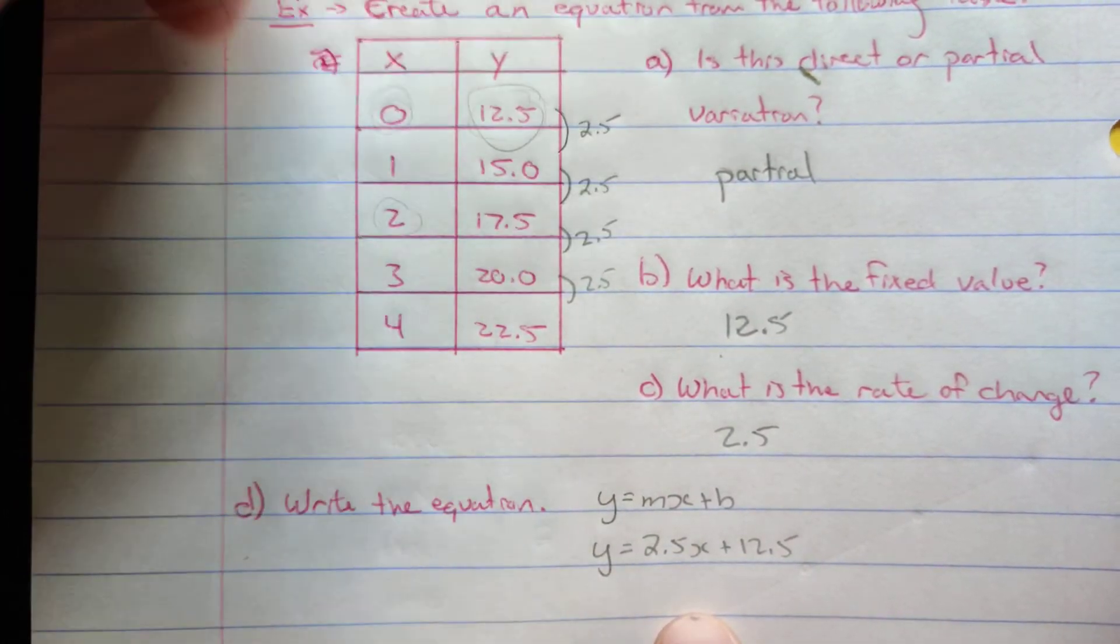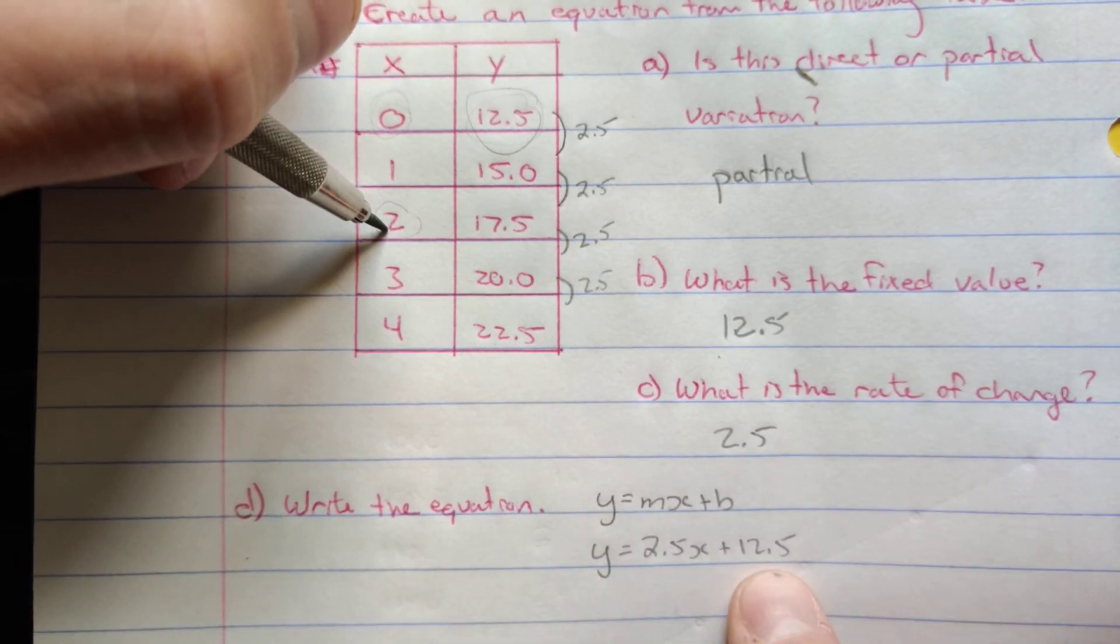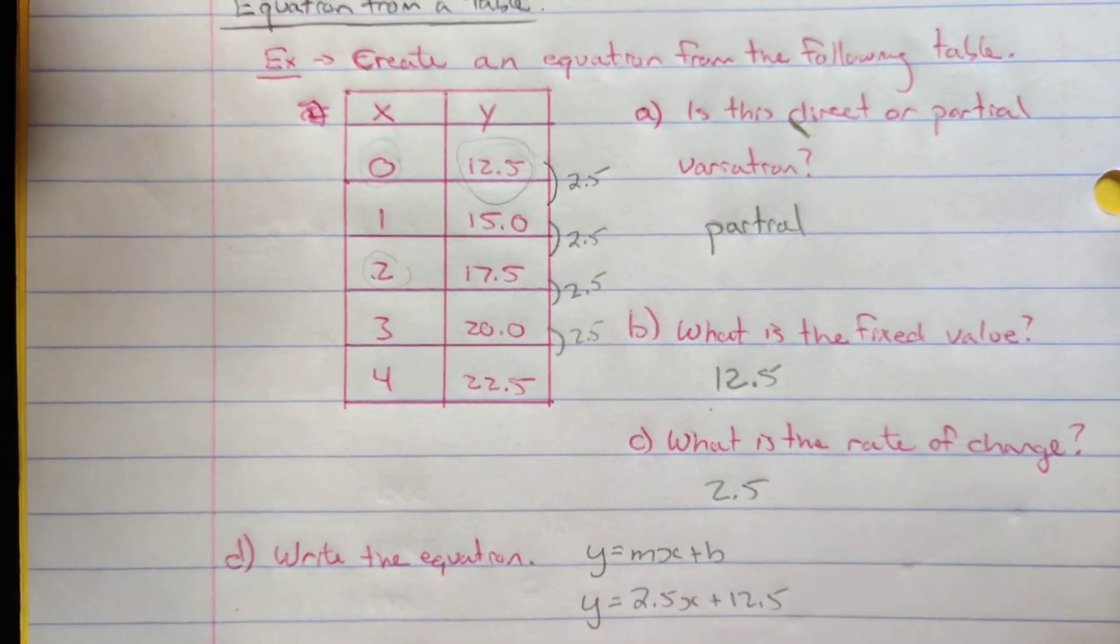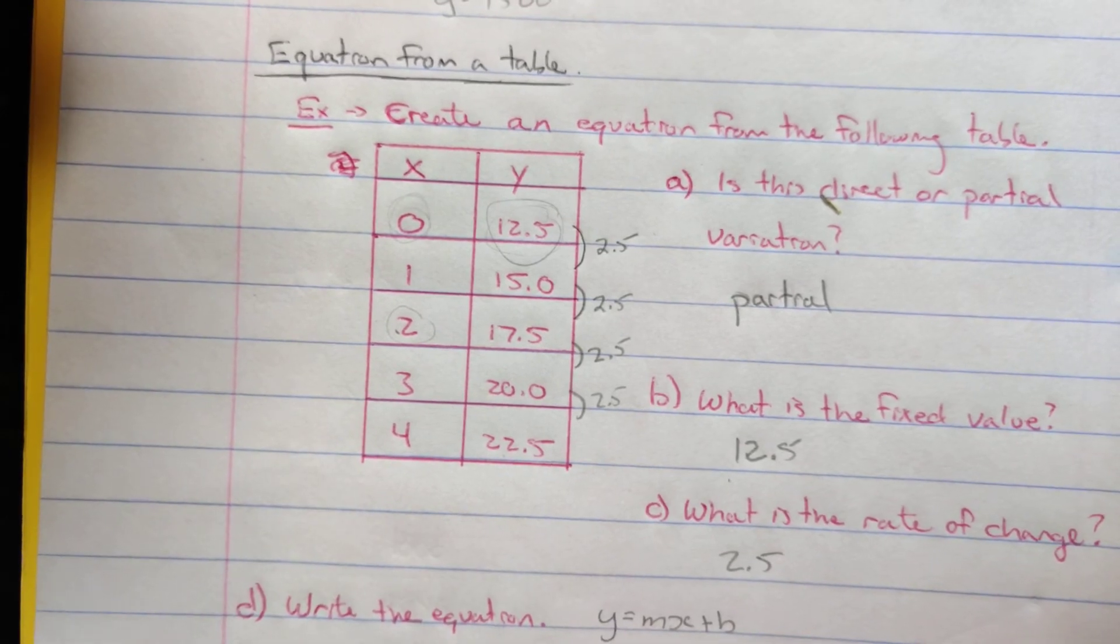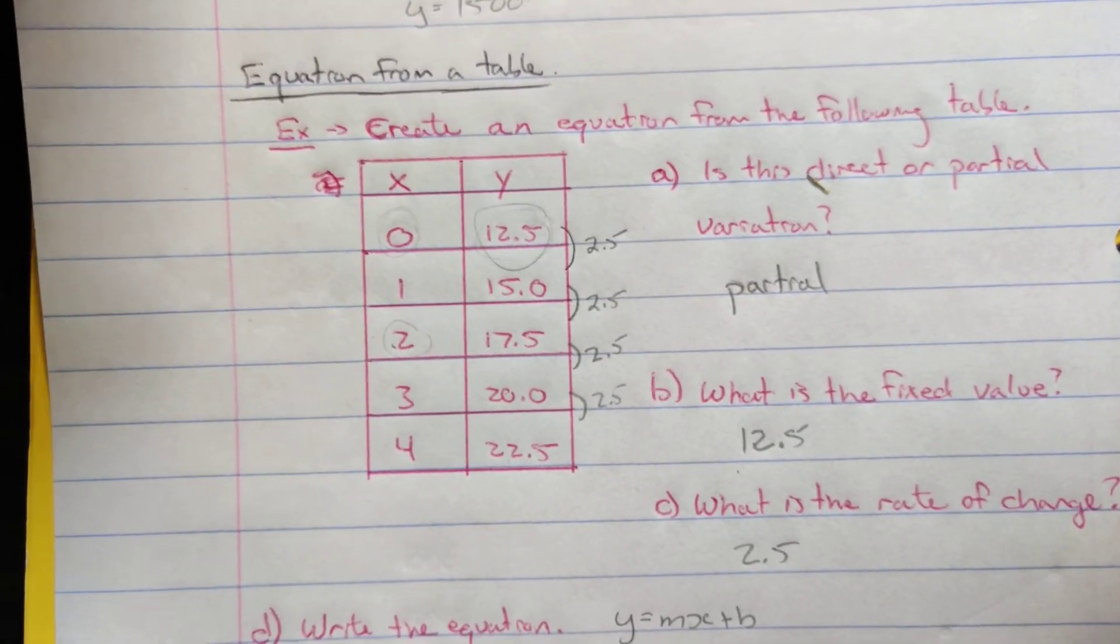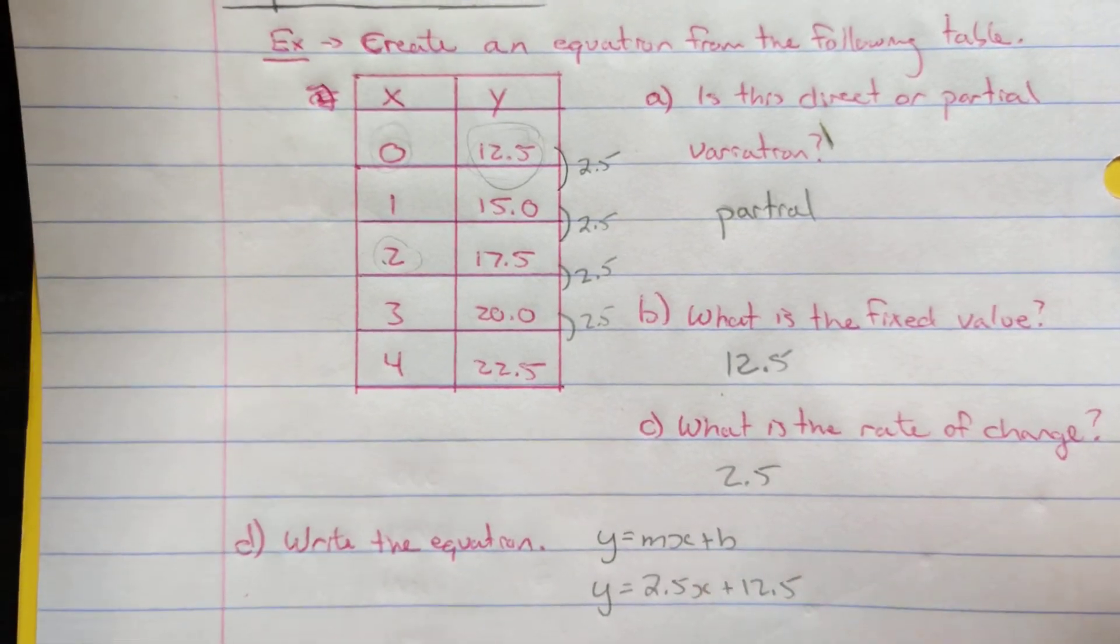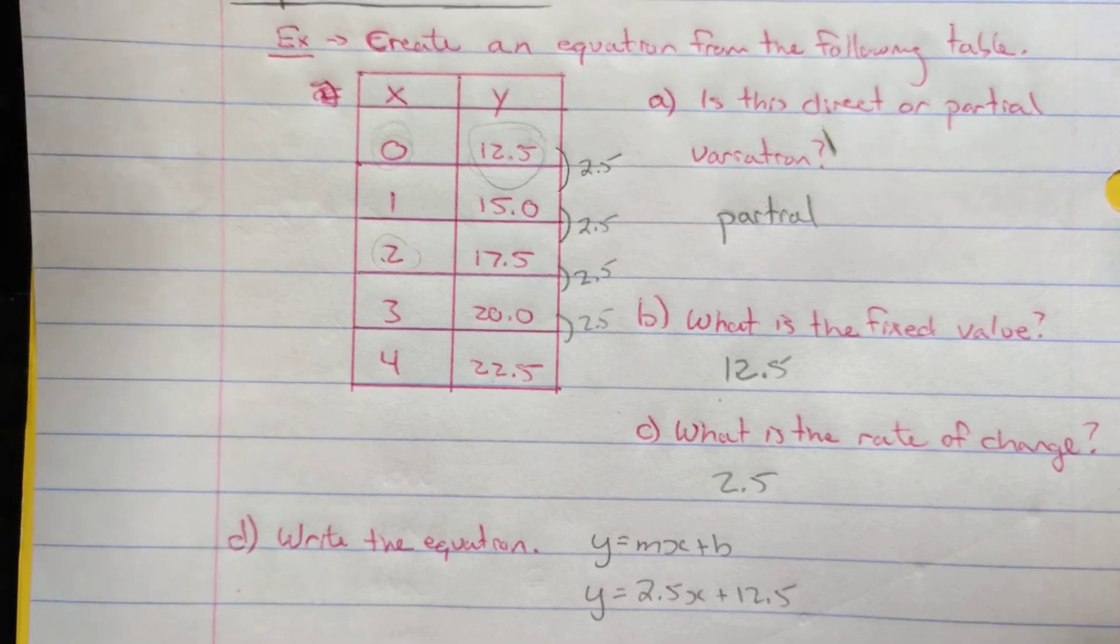And we can test that out quickly. At 2, we should get 17.5 as the y value. So 2 times 2.5 is 5. 5 plus 12.5 is 17.5. That does work out. So you can get the initial value and rate of change from the table. Or you can get it from a graph. The difference between partial variation and direct variation is simply the plus b at the end. We're adding a value at the end. Otherwise, direct variation is 0. Partial variation, add the value.